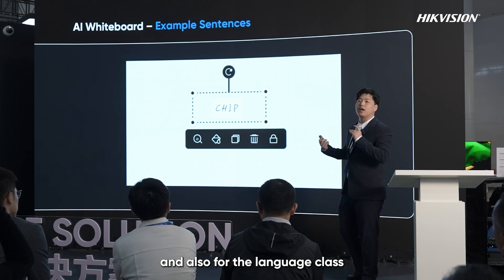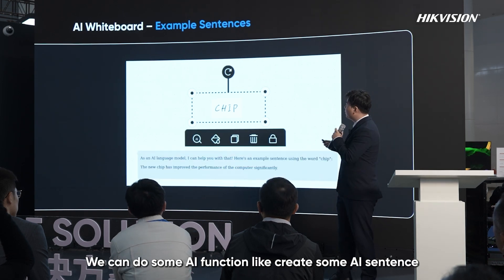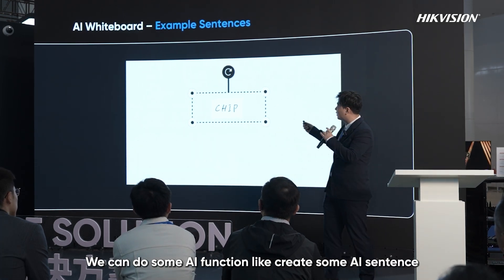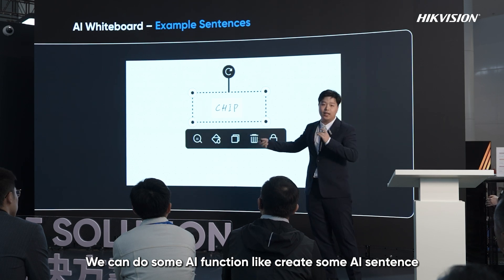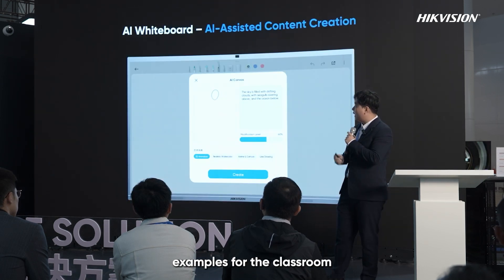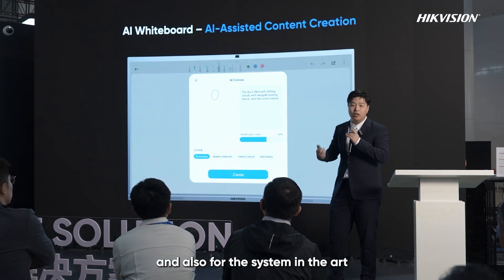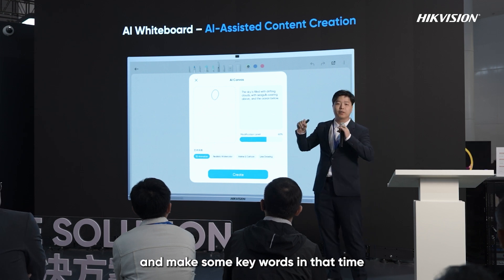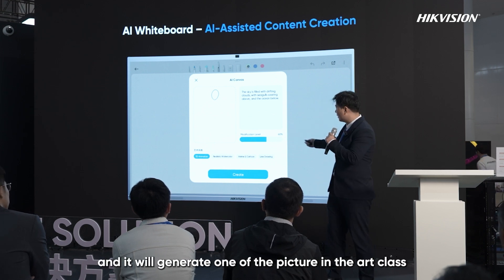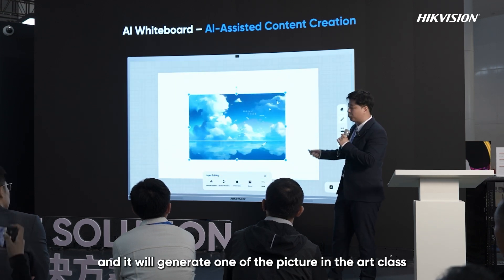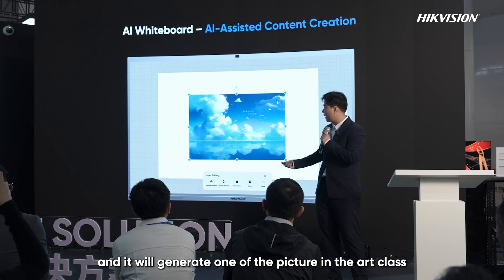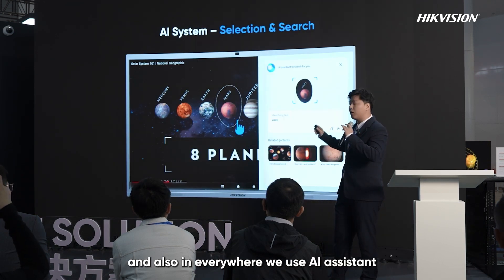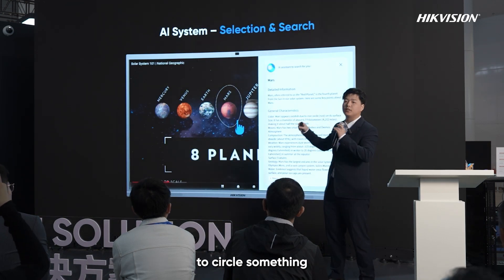For language class, AI can create example sentences for the classroom. For art class, teachers can draw a circle and add some keywords, and the AI will generate a picture. And throughout everything, our AI can assist by letting you circle something on screen to get more information.